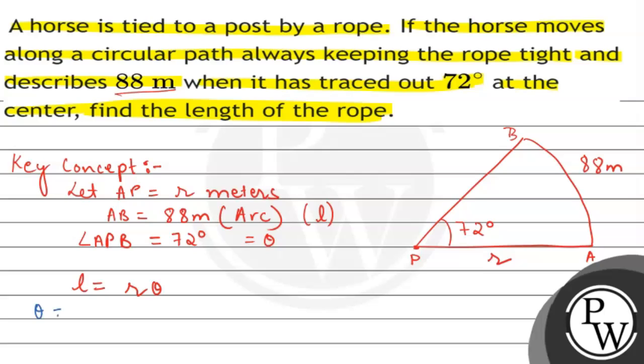So if we change to radians, 72 degrees multiplied by pi divided by 180 degrees equals 2 pi by 5. We have theta value as 2 pi by 5.